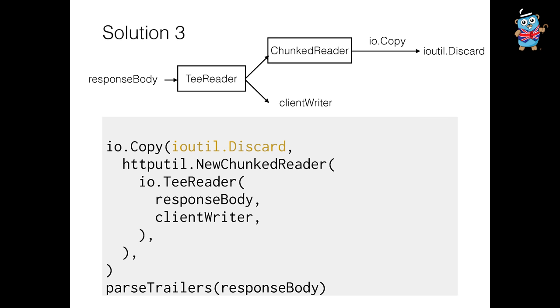Let's think about this code for a minute. Could we implement this in a single reader? Yes, we could. Would that be more or less performant? Benchmark it — that's a good answer. It basically comes down to the number of copies you're doing. With the current approach, we're doing two copies — through the TeeReader to the client writer, and also into the chunked reader and discard. In a single reader we'd have just one copy, so it's slightly more efficient, but also significantly more code — it won't fit on one slide. It's a trade-off.